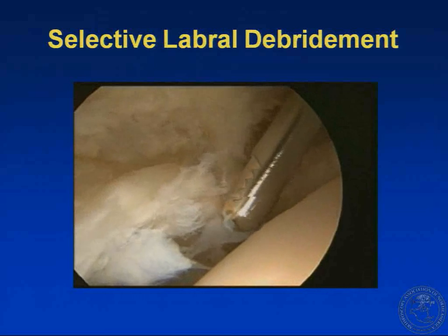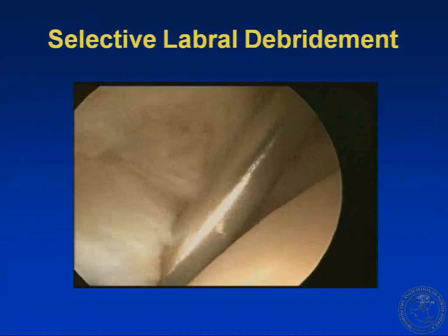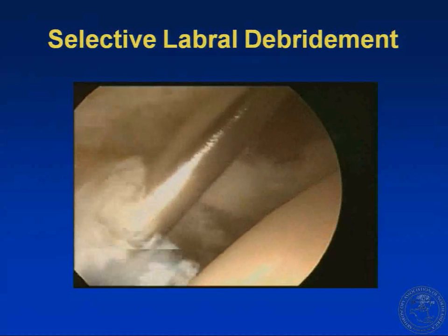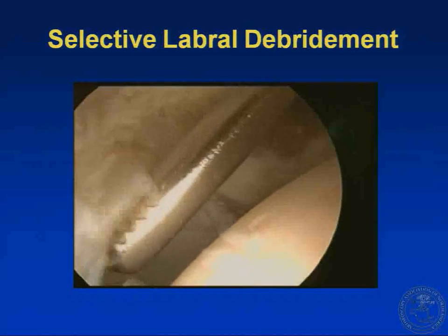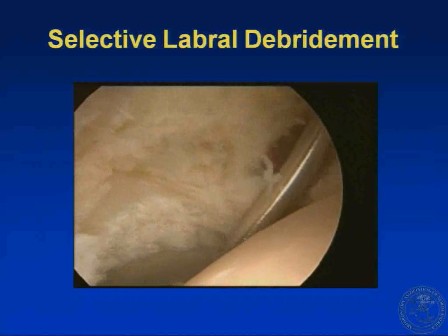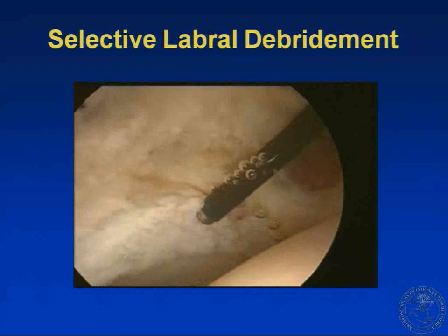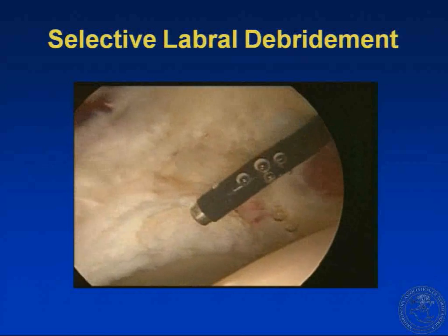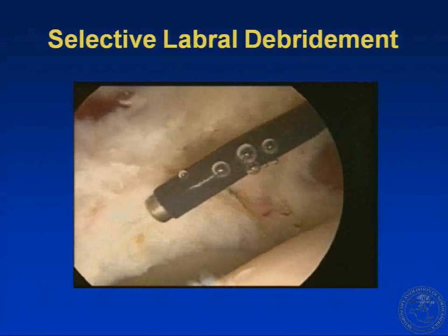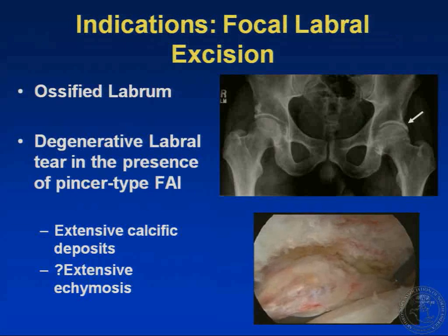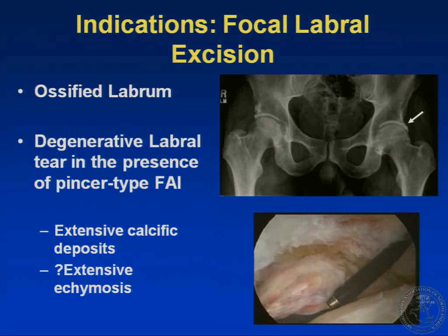This is an example of a right hip. A shaver is coming in — there's an articular-sided labral tear with no associated pincer impingement. The shaver is used to debride the labrum, and then a thermal device is used to finish the debridement, removing any unstable fragments.